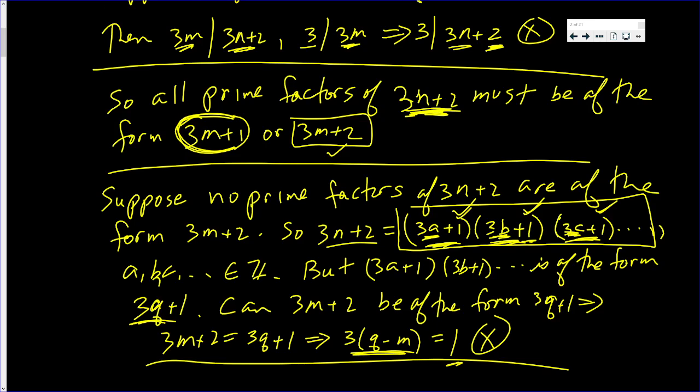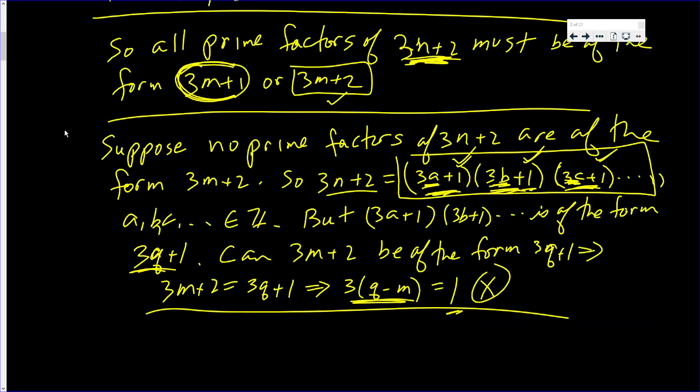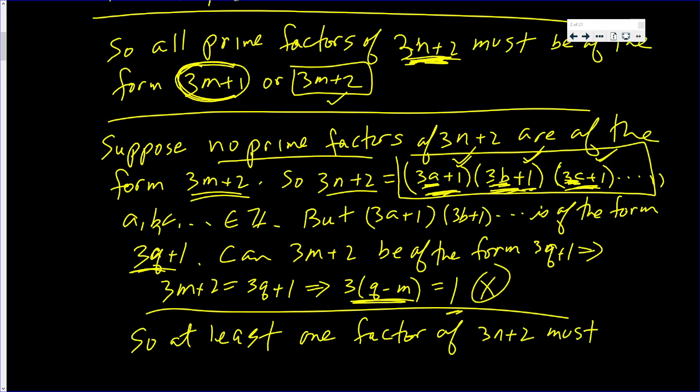So it is not true that no prime factors of 3n plus 2 can be of this form. So at least one factor of 3n plus 2 must be of the form 3n plus 2, which is the same form. And that's what we set out to prove. That's what we did prove.